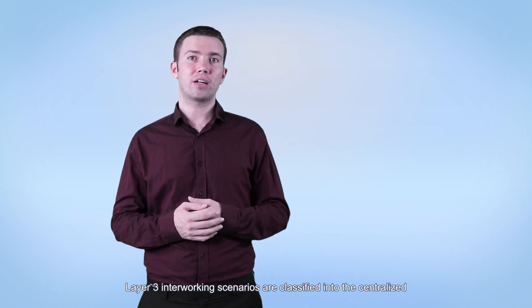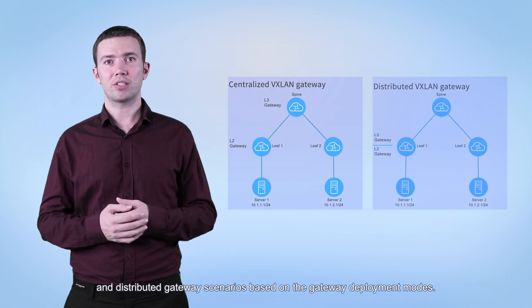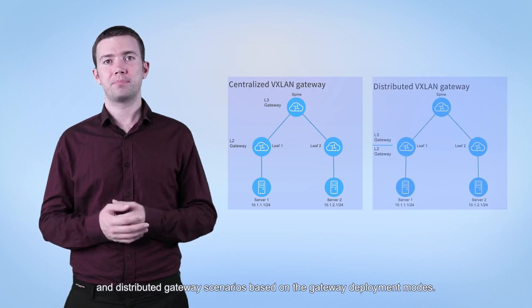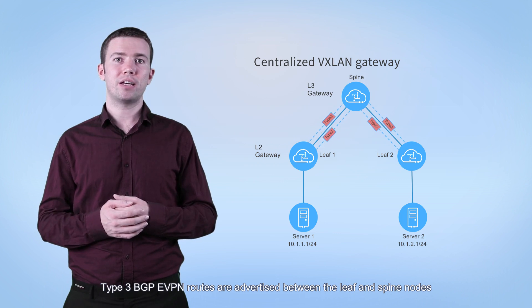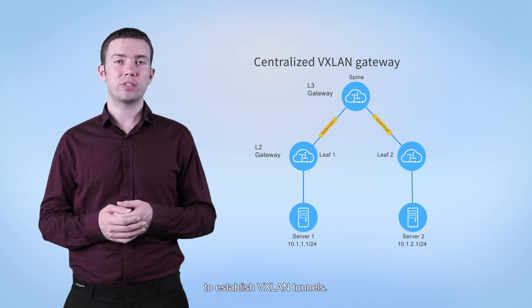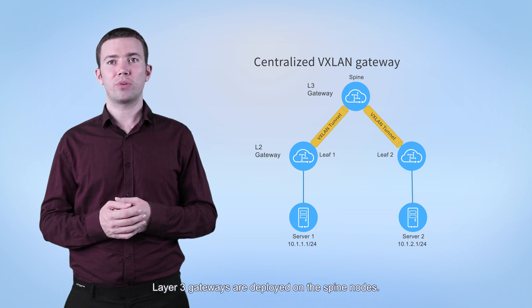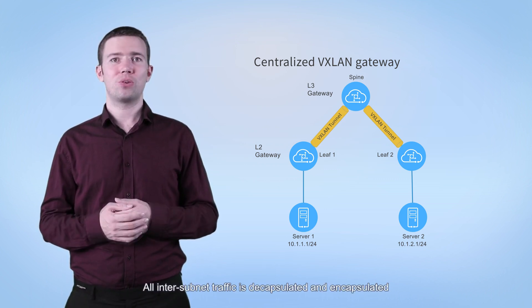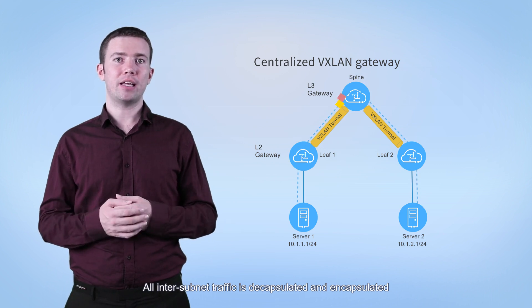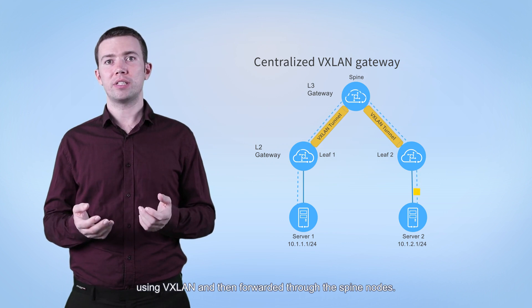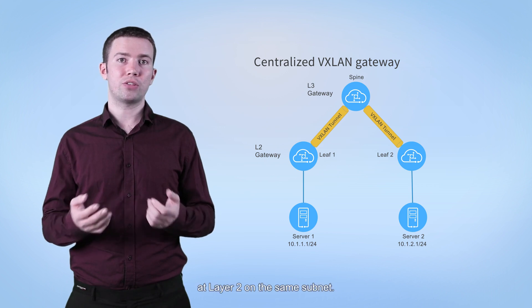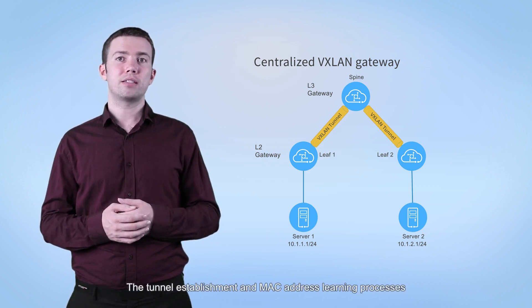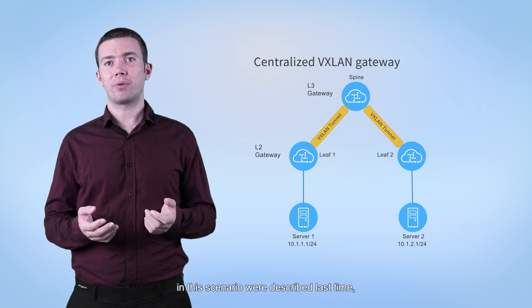Layer 3 interworking scenarios are classified into centralized and distributed gateway scenarios based on the gateway deployment modes. In a centralized gateway scenario, type 3 BGP eVPN routes are advertised between the leaf and spine nodes to establish VXLAN tunnels. Layer 3 gateways are deployed on the spine nodes, and all inter-subnet traffic is decapsulated and encapsulated using VXLAN and then forwarded through the spine nodes. The leaf and spine nodes can communicate with each other at layer 2 on the same subnet. The tunnel establishment and MAC address learning processes in this scenario were described last time, so I will not go into more detail today.